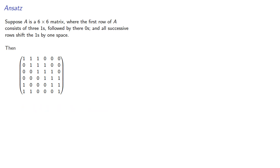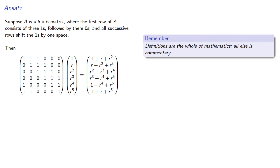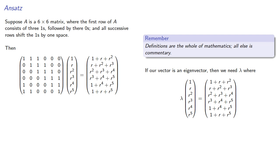Then our matrix, applied to our vector, will give us... Now, remember, definitions are the whole of mathematics, all else is commentary. If our vector is an eigenvector, then we need some lambda where lambda times our vector gives us the output.